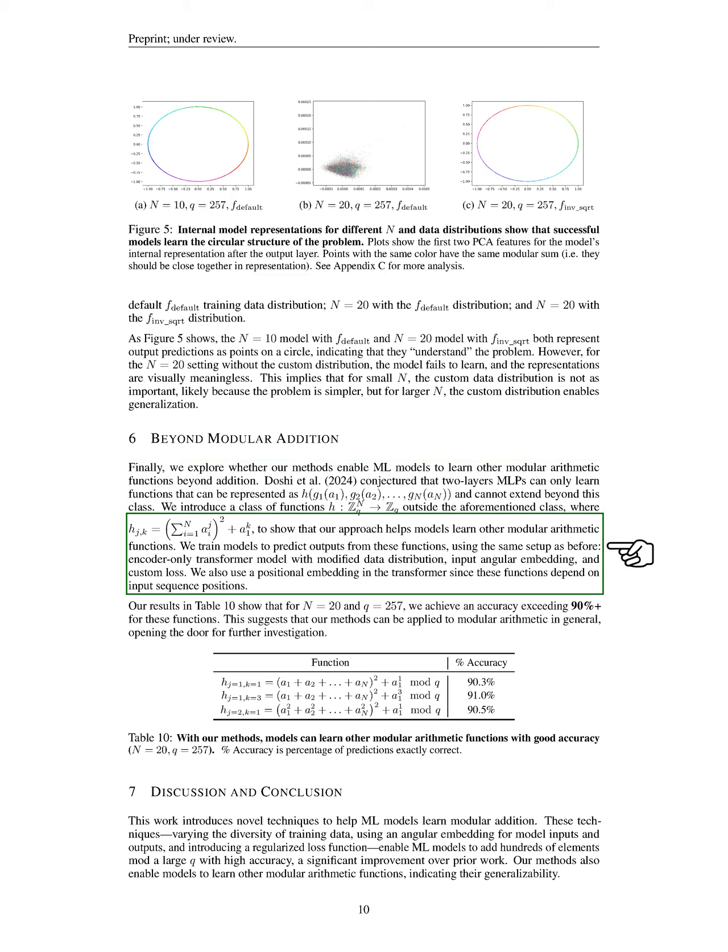Specifically, we define a function that involves summing the inputs raised to certain powers and then squaring that sum, plus an additional term based on one of the inputs. To test our approach, we train models to predict outputs from these functions using the same setup as before, which includes an encoder-only transformer model, a modified data distribution, input angular embedding, and a custom loss function. We also incorporate positional embedding in the transformer since the functions depend on the order of the input sequence.